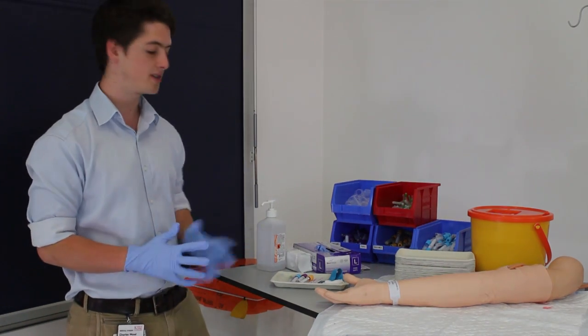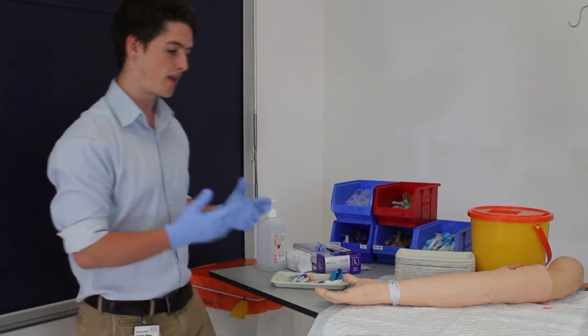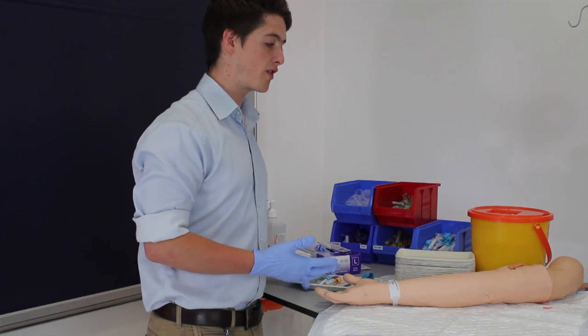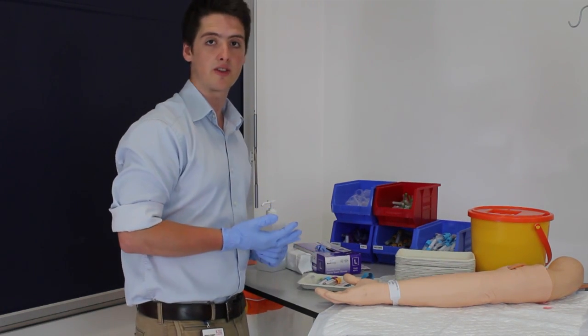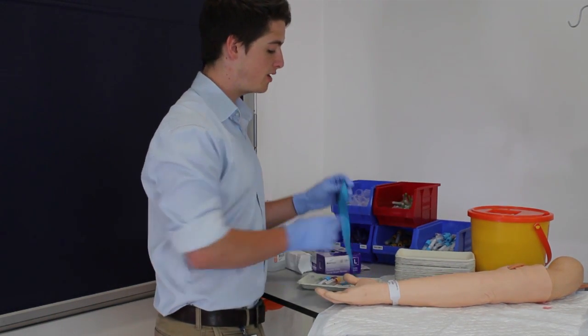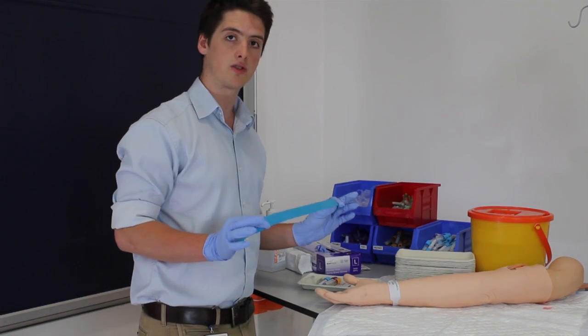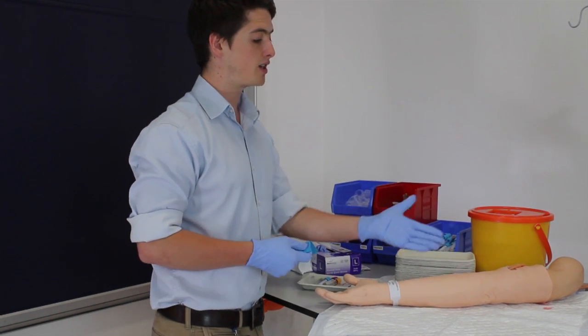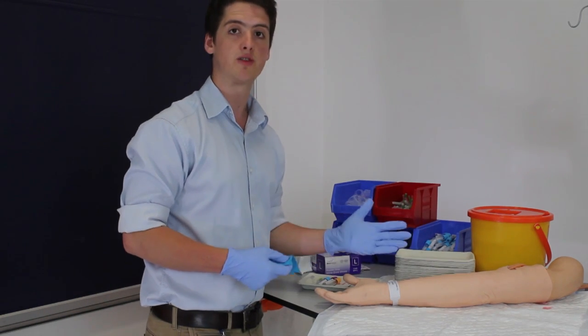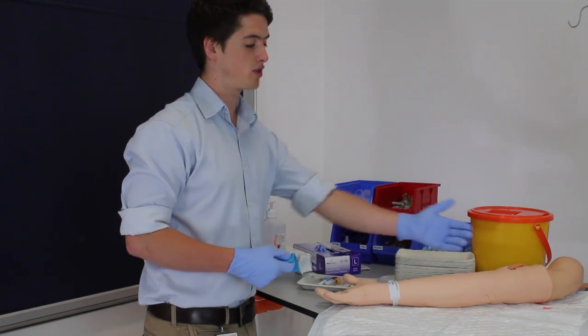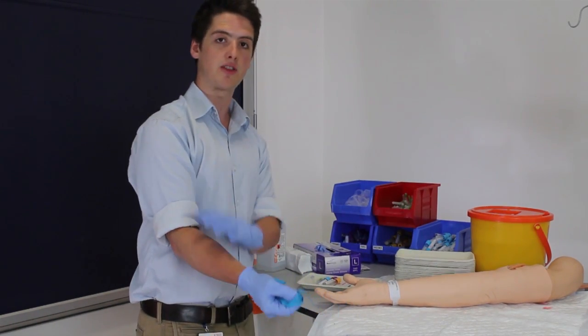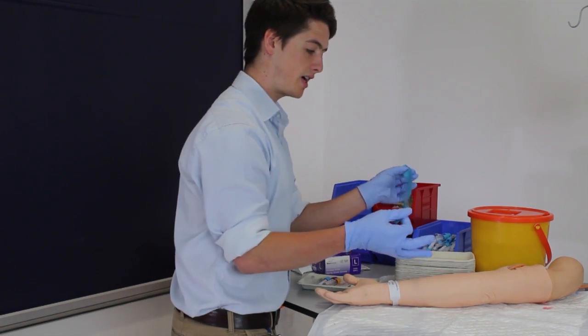Once your gloves are firmly in place and you've gathered your equipment together, you can then approach the patient. Just make sure that they're still all right for you to go ahead with the procedure and they understand what's about to happen as you explained before. Then take your tourniquet, ask the patient whether they have an arm which they would prefer you to use, and get them to expose it to above the elbow so that you can see the whole of the arm. Then you attach your tourniquet.